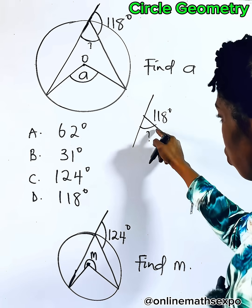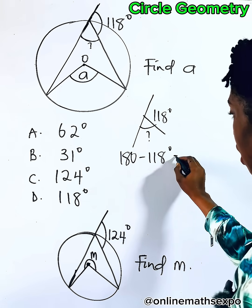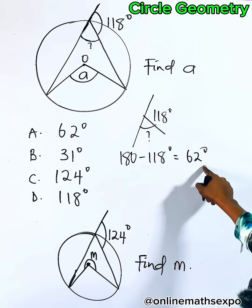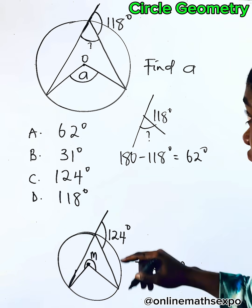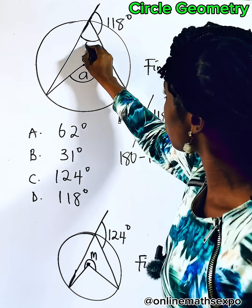What will be this? To do that, you do 180 take away 118, and that will give you 62 degrees. Your reason is angle on a straight line, so here we get 62 degrees. And if this place is 62, how do you find 'a'?